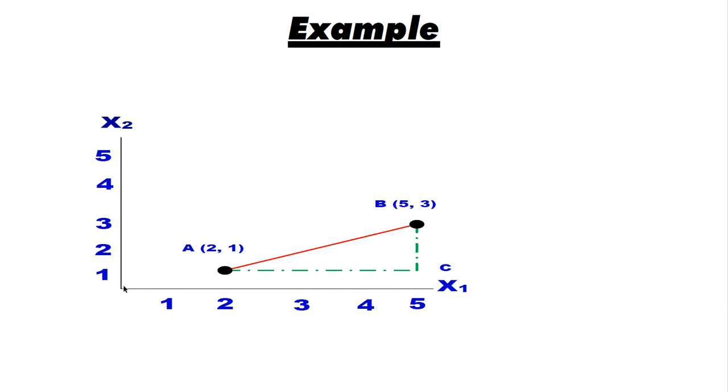Here is the example. Look at the graph. This is two-dimensional: x1 on the x-axis and on the y-axis the value is x2. Here the point A is equal to (2, 1). 2 is x1 and on x2 this is 1. Similarly, point B is x1 equals 5 and on the x2 side this is 3. We find the distance between these two points A and B. This is a right angle triangle and this is point C. In other words, we want to find the hypotenuse of this triangle.